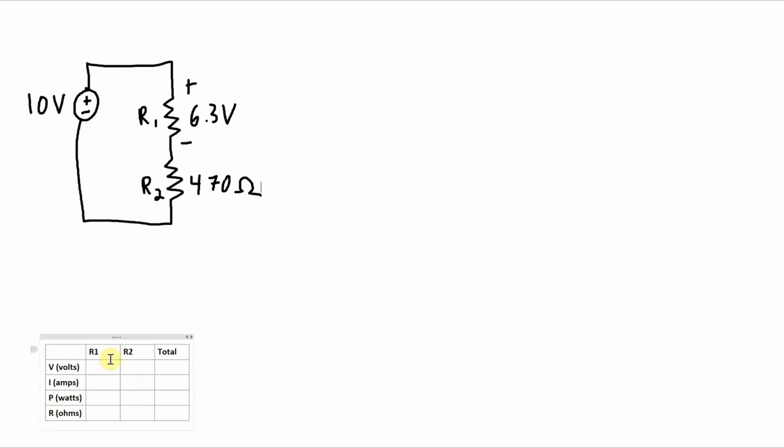Okay, well here's the second circuit. I'm going to start filling in the table with the stuff I already know here. A number of ways to approach this problem. I am going to start by figuring out the voltage across R2 by using Kirchhoff's voltage law. If I have 10 volts from the source, and I know that 6.3 volts is dropped across R1, I can pretty easily figure out R2, and I get 3.7 volts.